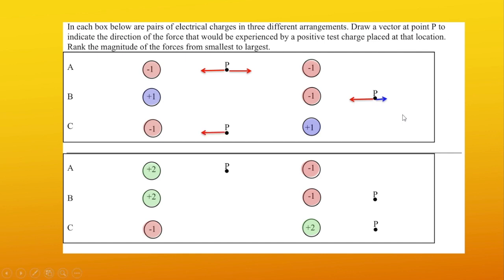For C, we have a positive charge pushing the test charge to the left, and then a negative one charge pulling it to the left as well. Because this is a positive test charge, negatives and positives attract. So in this case, we have two arrows pointed in the same direction.